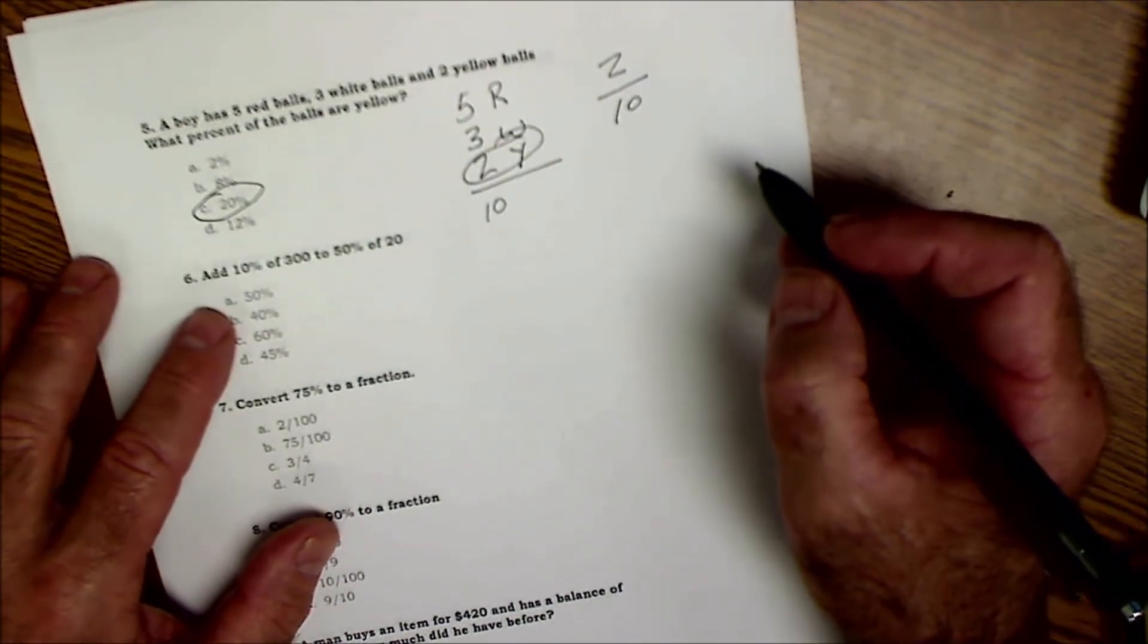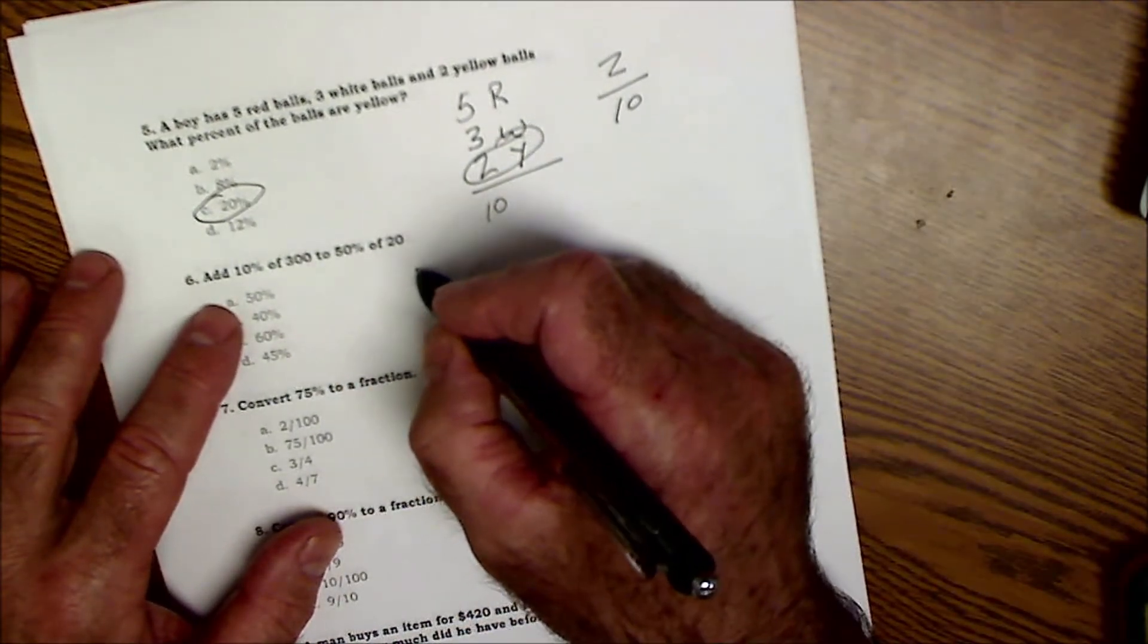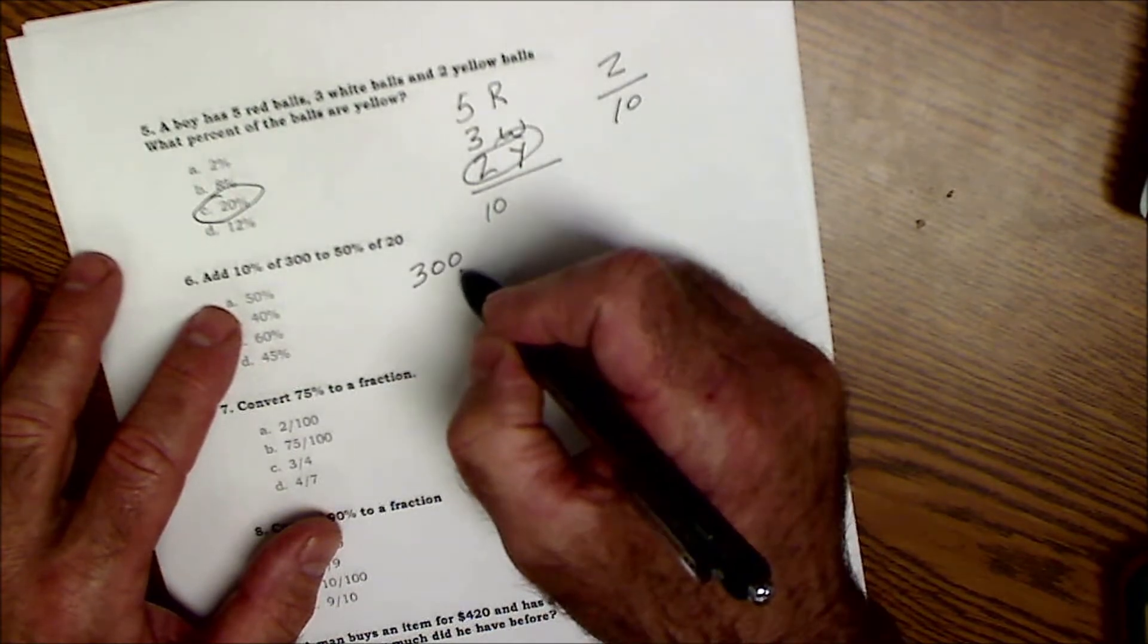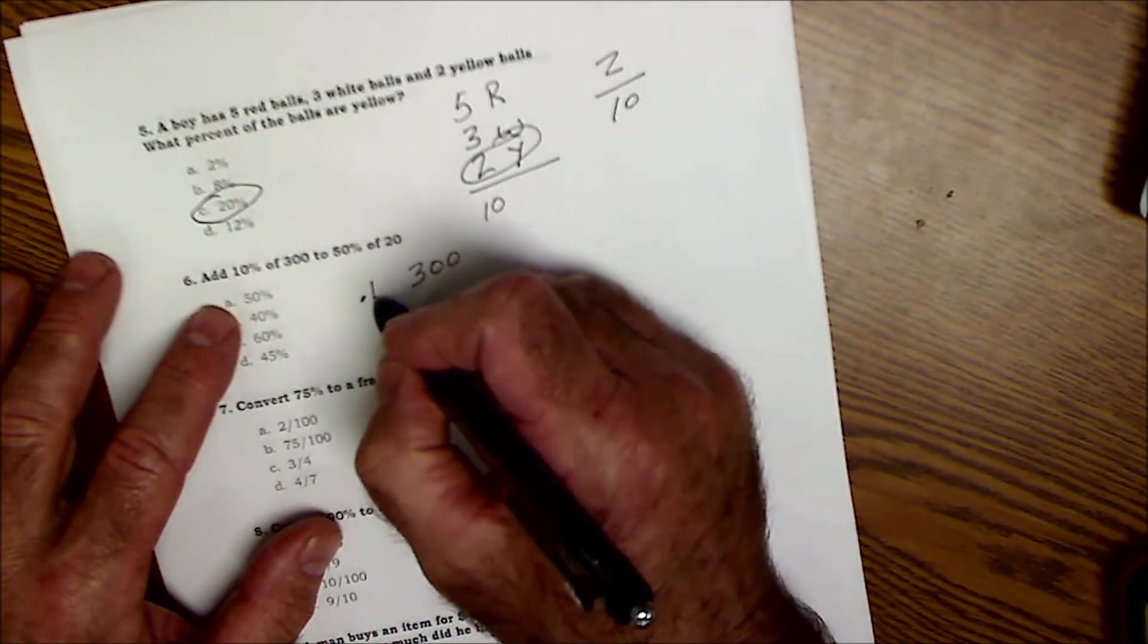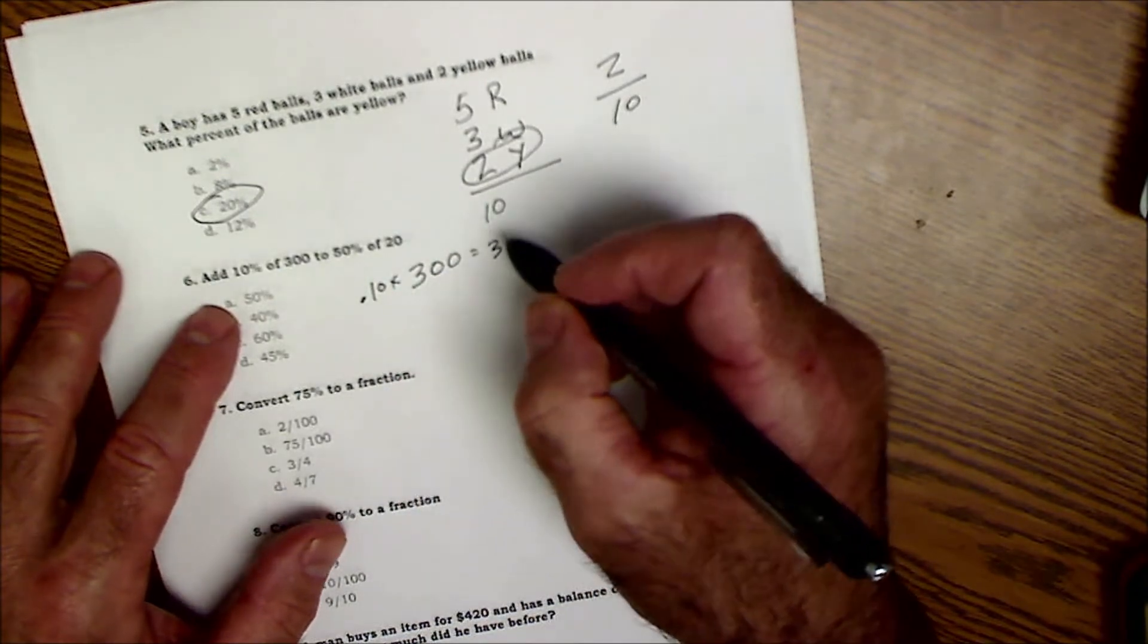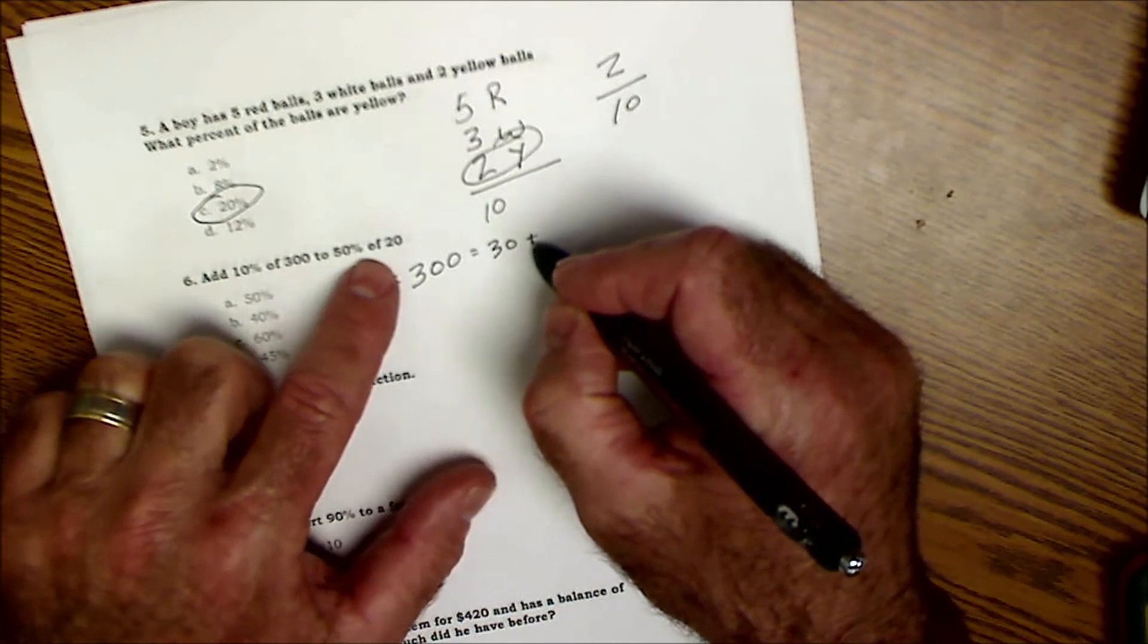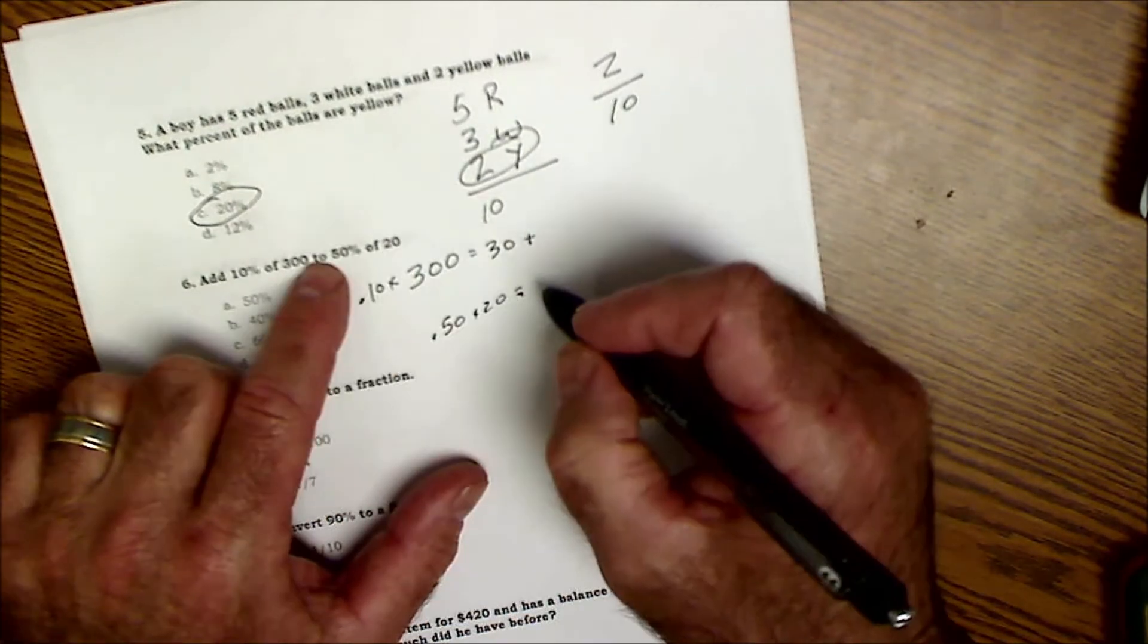Number six: add 10% of 300. 10% of 300, so I could just knock that over to get 30. So 0.1 times 300 is equal to 30, so take that and add it to 50% of 20, which is 10. So 30 plus 10 gives you 40.